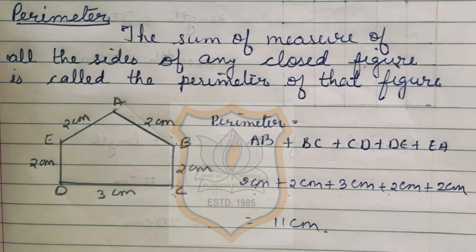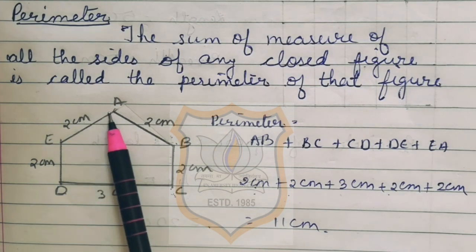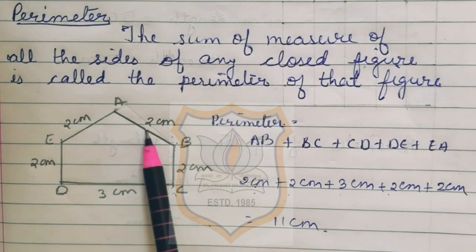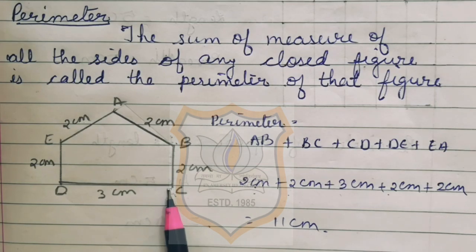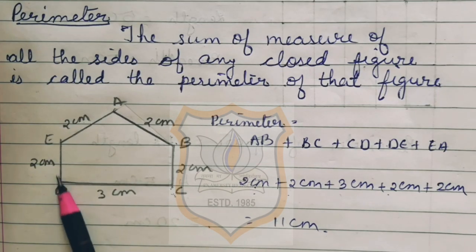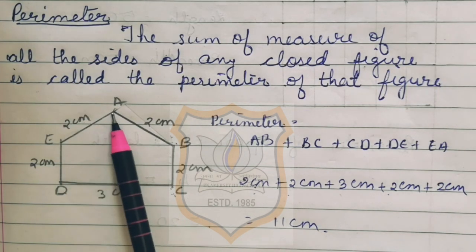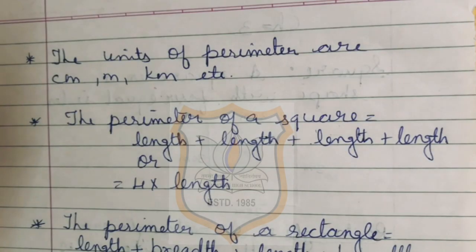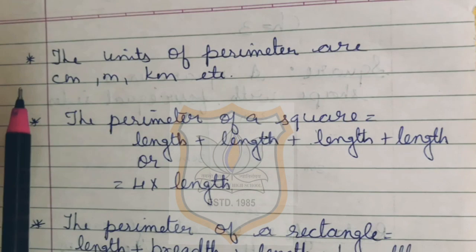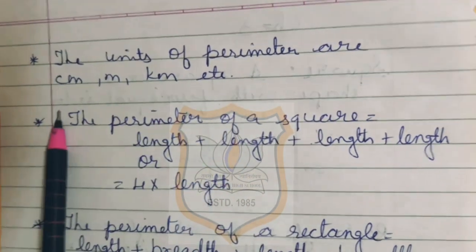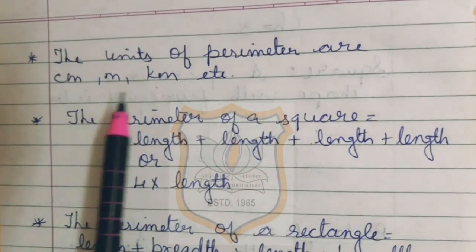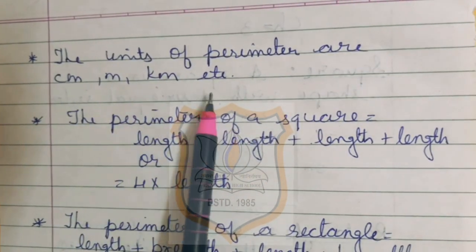So we can see that to find out the perimeter, you have to just add the measurement given on all the sides of that figure. The units of perimeter are cm, m, km, etc.